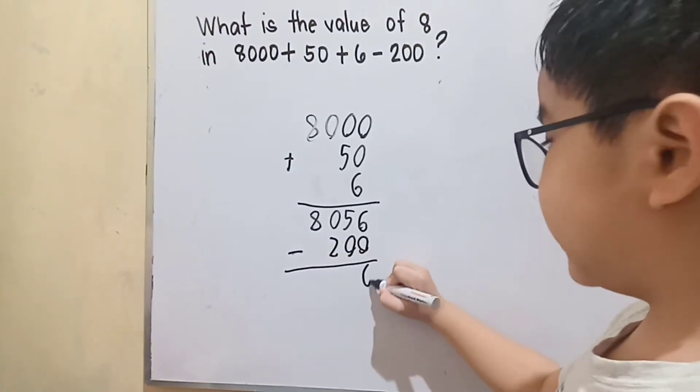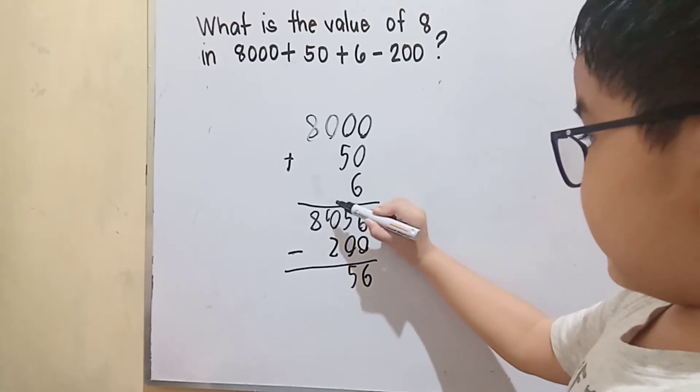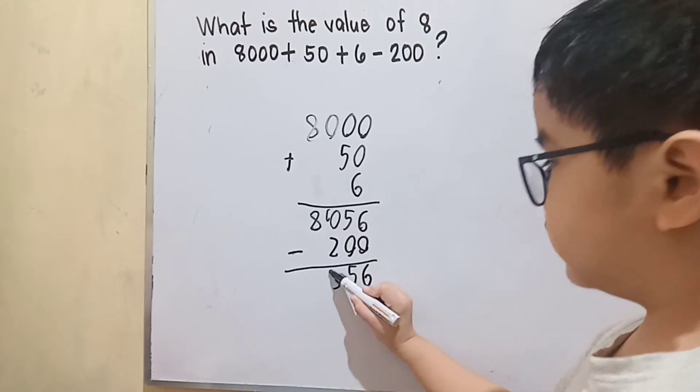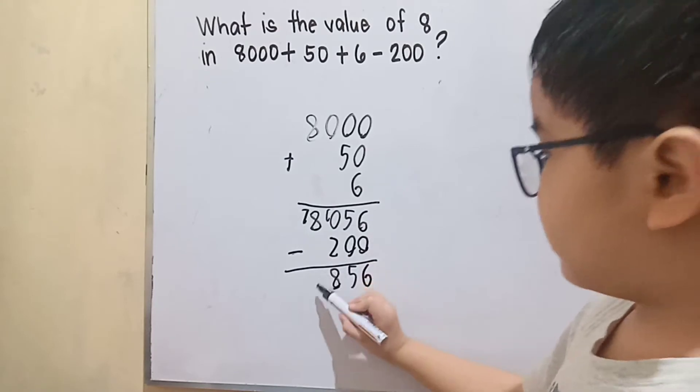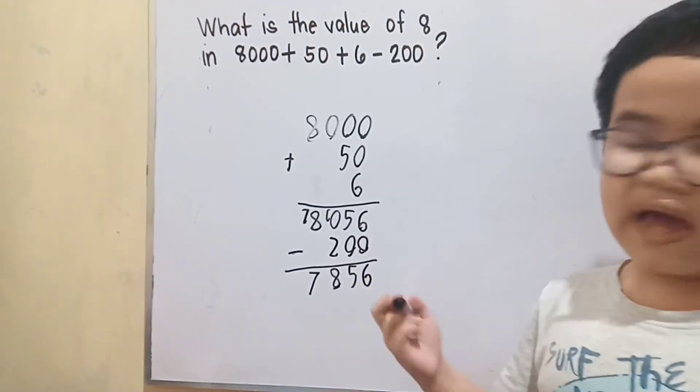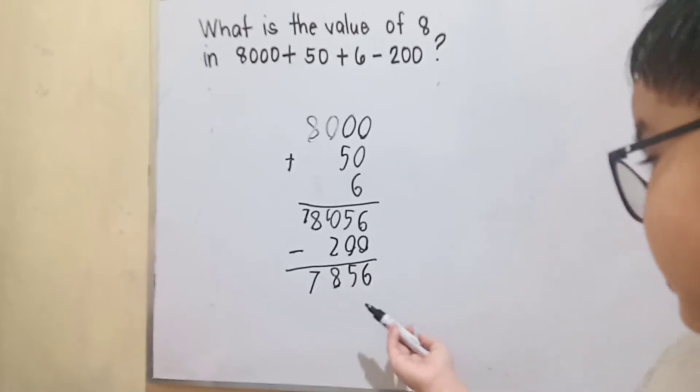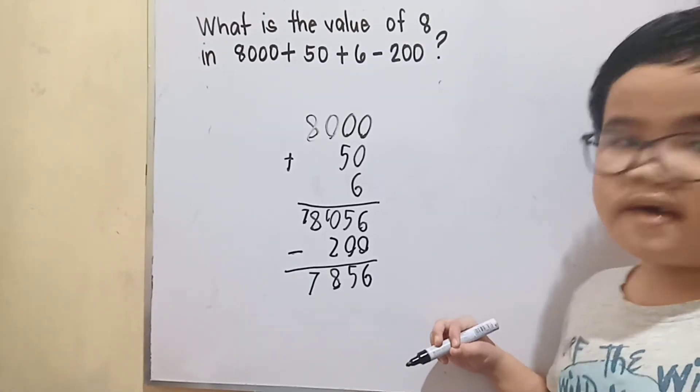We have 6 minus 0 is 6, 5 minus 0 is 5, 10 minus 2 is 8. So we have 7,856.